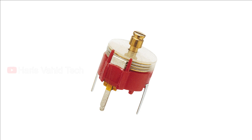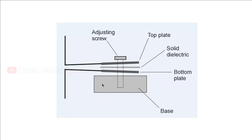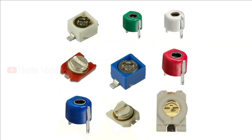There are two types of trimmer capacitors based on their dielectric: air or ceramic. They consist of semi-circular metal plates where one is fixed and the other is rotated using a screwdriver, changing the amount of overlap between the plates. Simple gear mechanisms can allow multiple turns between lower and higher settings. The value of a trimmer capacitor is typically less than 100 picofarads. They are commonly used in radio frequency, very high frequency, and microwave frequency band circuits.